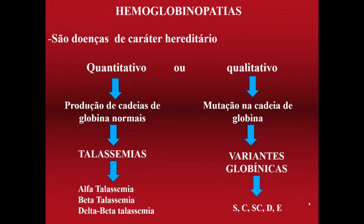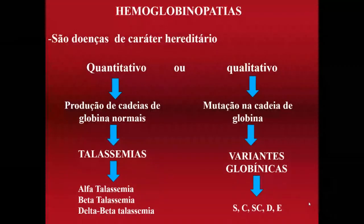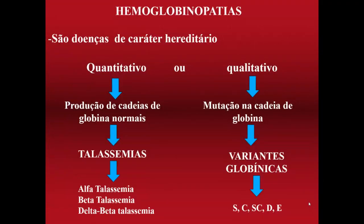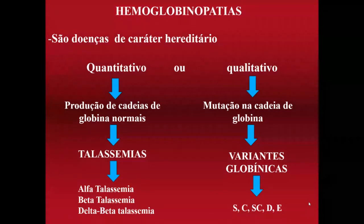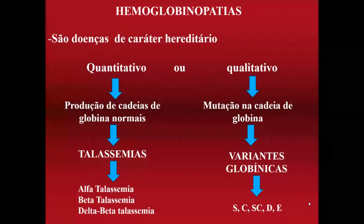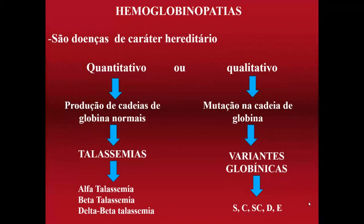Quando falamos de defeito de qualidade da hemoglobina, estamos falando de mutação nessas cadeias de globina, que é a proteína que forma a hemoglobina. Lembrando que a hemoglobina é um tetrâmero, uma molécula formada por quatro proteínas. Hoje vamos falar dos defeitos quantitativos, ou seja, das talassemias.